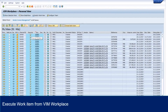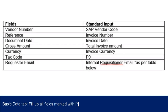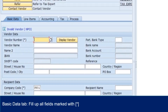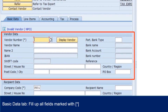Open workflow from VIM Workplace. Choose the VIM document and click Execute button. Basic Data tab: fill up all fields marked with star. These fields are mandatory and invoice cannot be processed without all these fields populated correctly. After filling up the vendor account and pressing enter, the system will auto-populate the vendor details, such as vendor name, address, and bank details.